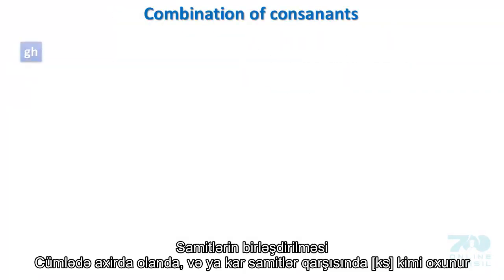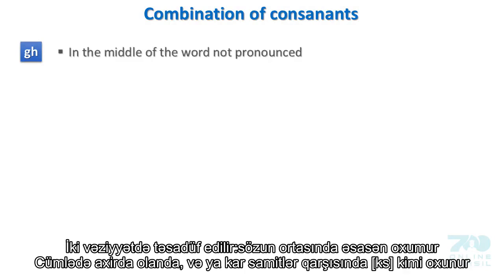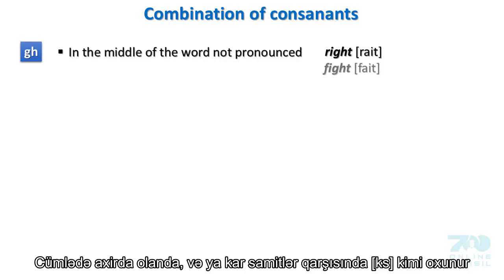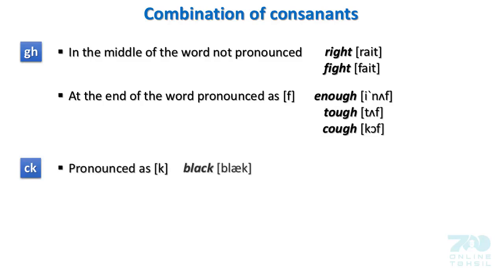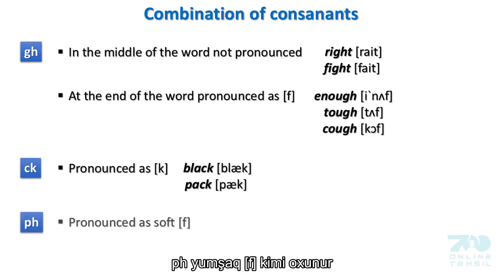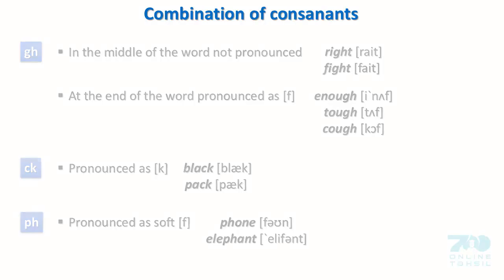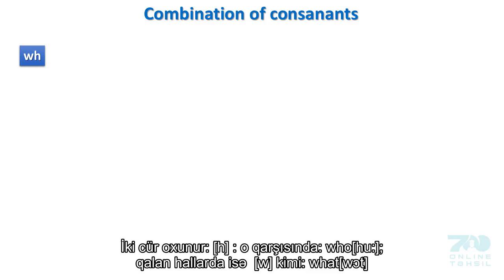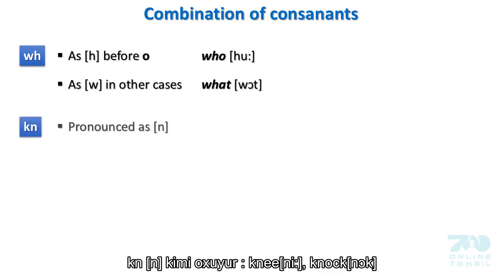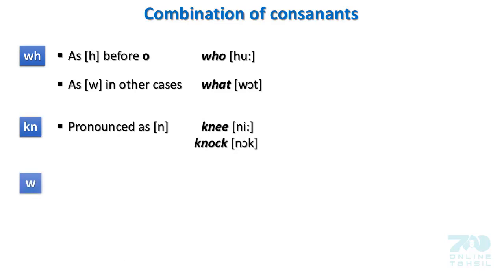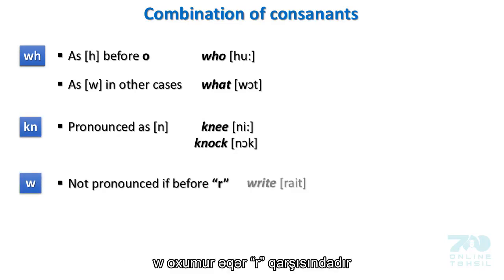Combination of consonants. GH is pronounced in two ways: in the middle of a word it is not pronounced (e.g., write, fight); at the end of a word it is pronounced as F (e.g., enough, tough, cough). CK is pronounced as K (e.g., black, pack). PH is pronounced as soft F (e.g., phone, elephant). WH is pronounced in two ways: as H before O (e.g., who), and as W in other cases (e.g., what). KN is pronounced as N (e.g., knee, knock). W is not pronounced if before R (e.g., right, wrong).